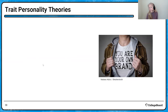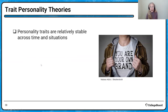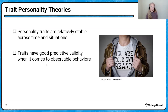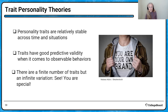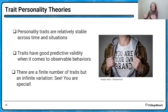Moving on to trait personality theories — more of the nature perspective, the idea that you're born with traits. According to trait theories, personality traits are pretty stable across time and situations. Traits have good predictive validity for observable behavior. All trait theorists believe there's a finite number of traits — maybe six to twelve different traits you can talk about, though in combination they make each person unique.